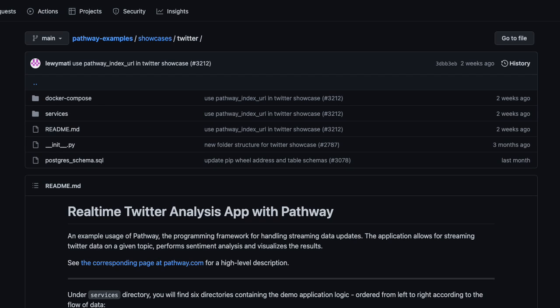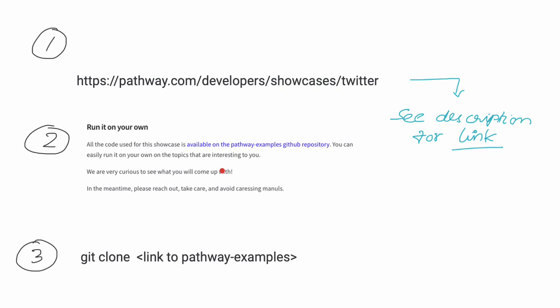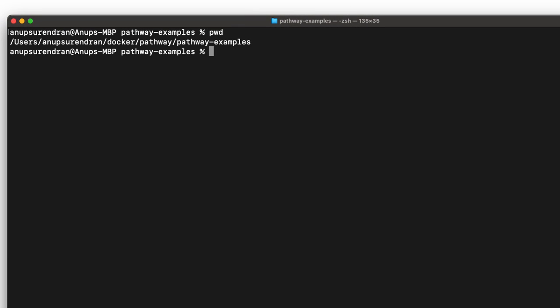Let me go through it slowly one more time. Go to that link, then follow the GitHub repo link, and then either fork it or clone it — I did a clone. So those are the three things to get started. Once you have the GitHub repo cloned, get into your terminal. I use Mac. Let me show you what the terminal looks like. I have a Pathway folder with Pathway examples underneath it — that's where I have my repository cloned.